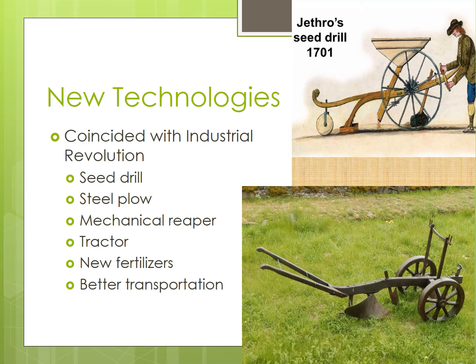And once the refrigerated train car was introduced in 1867, U.S. farmers could ship perishable foods such as meat over larger distances, reaching city populations quickly.